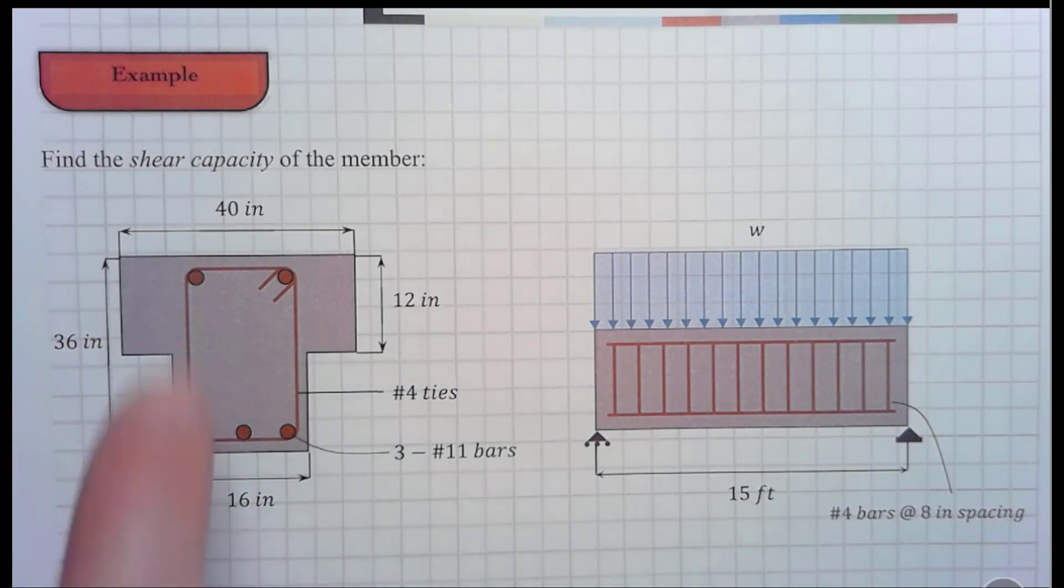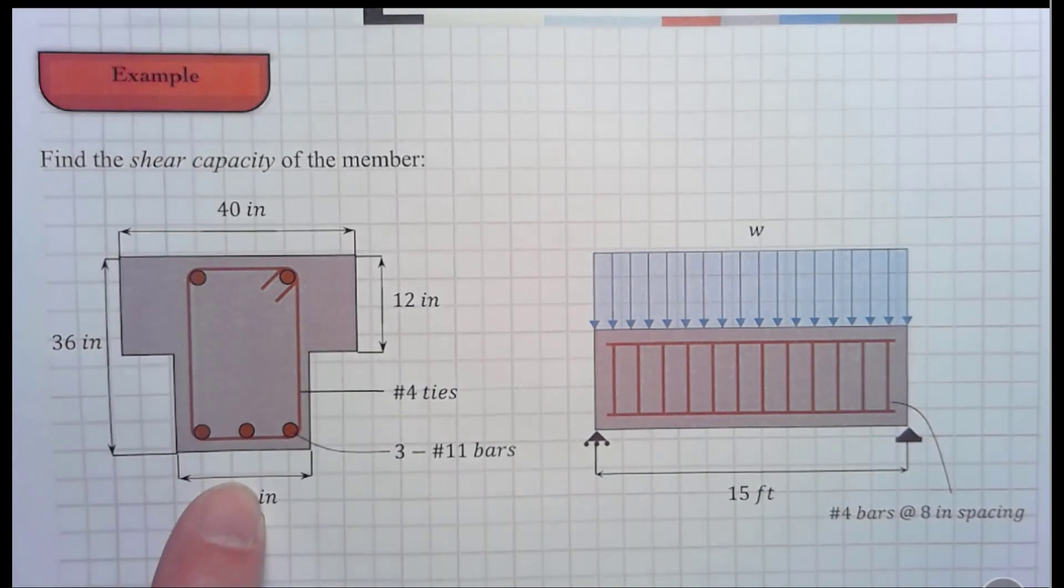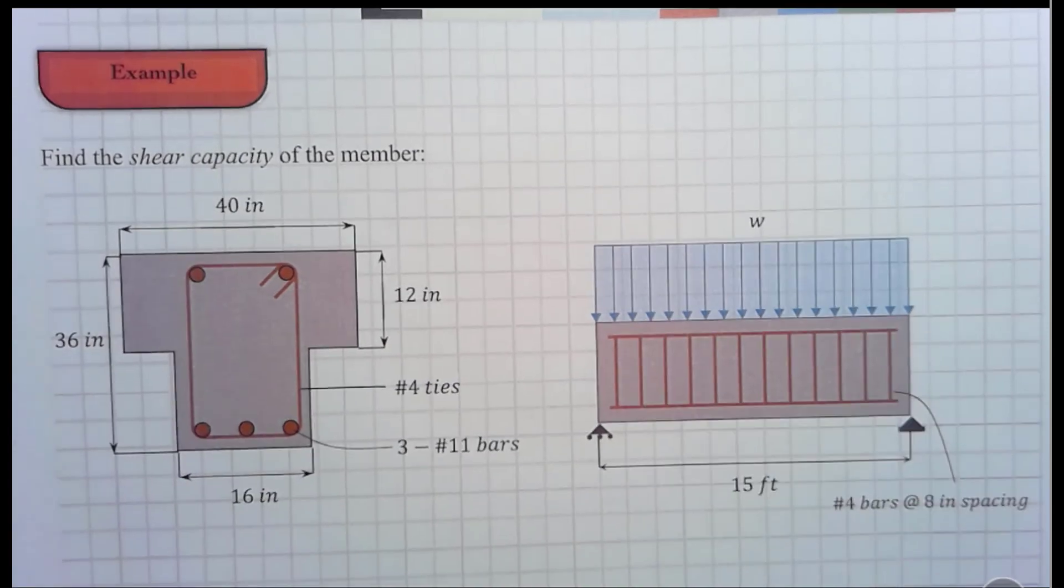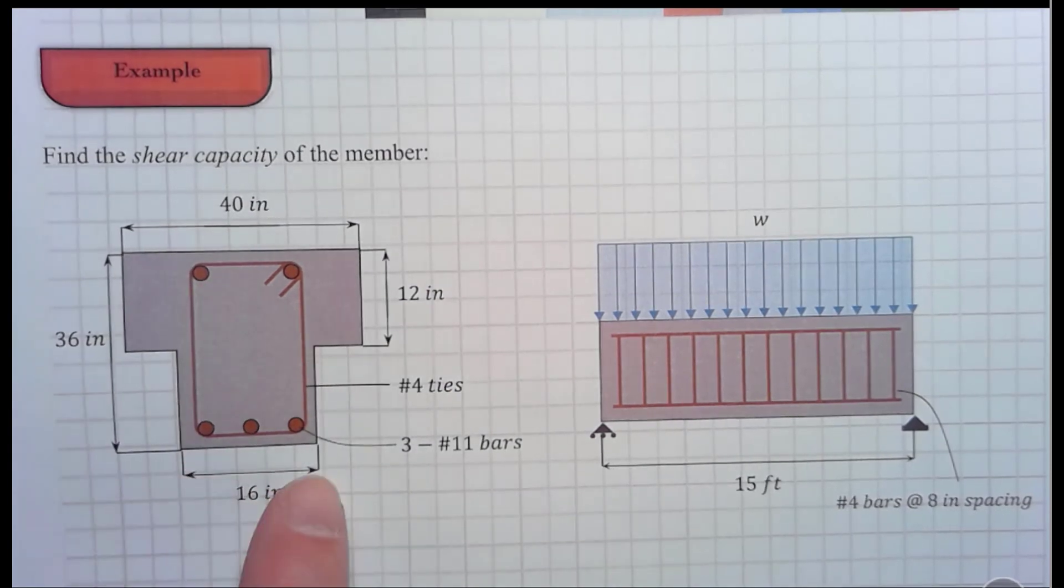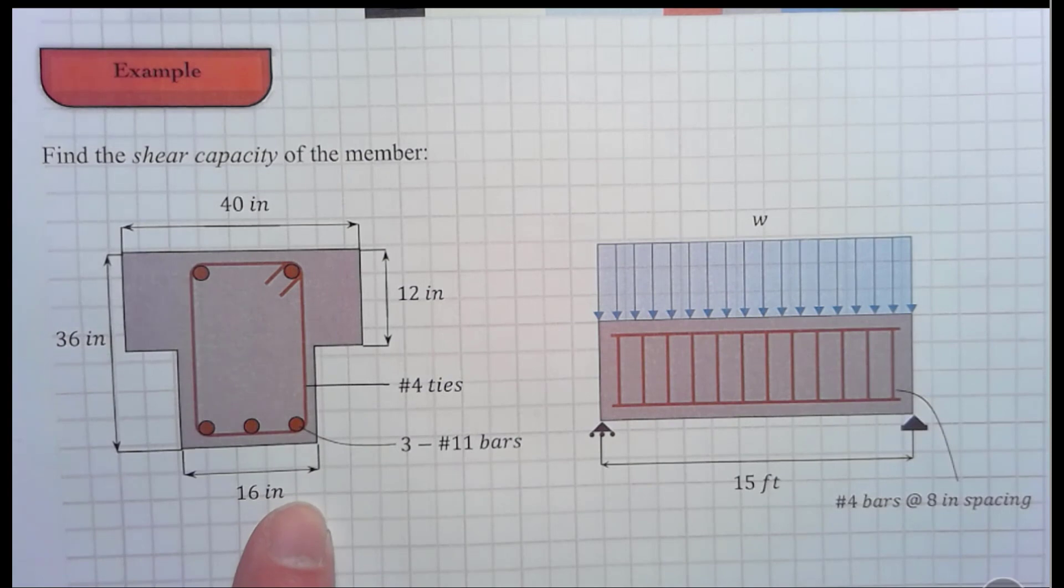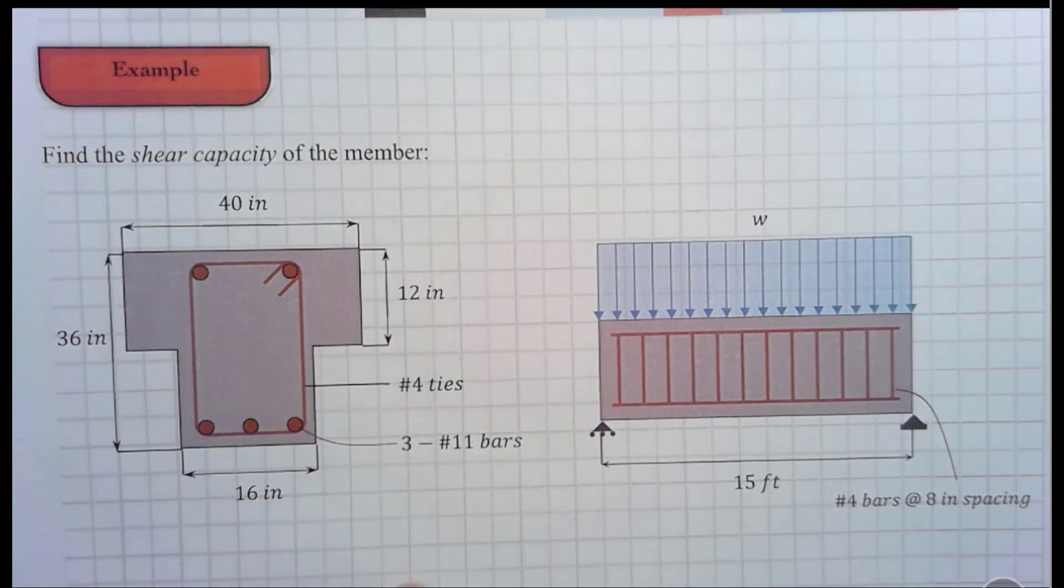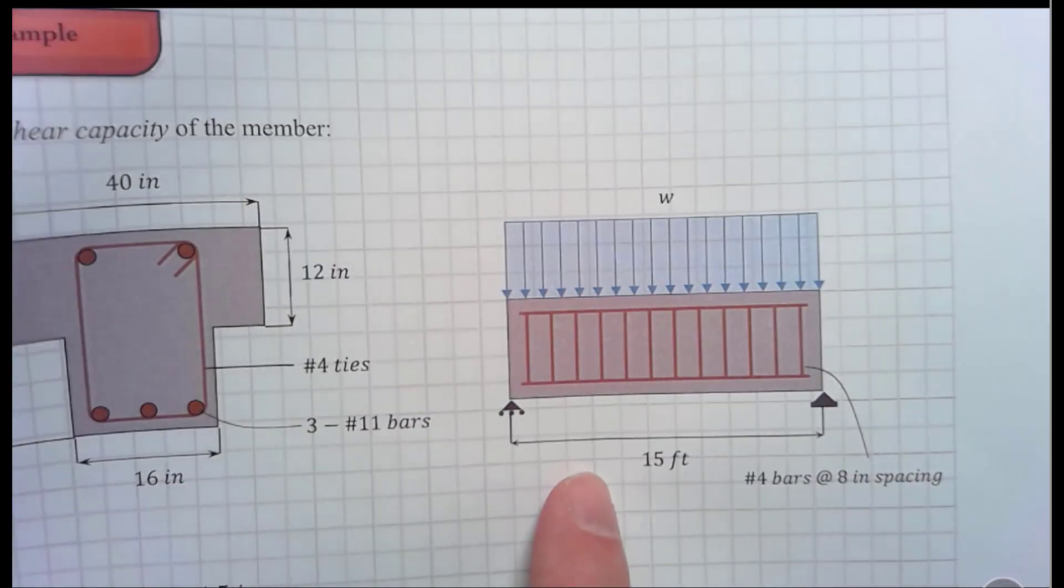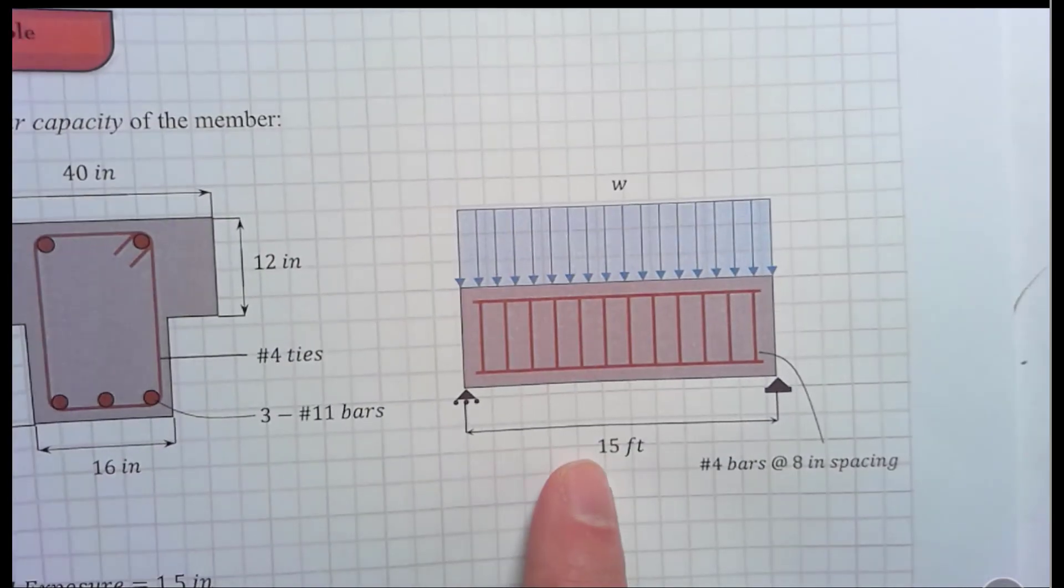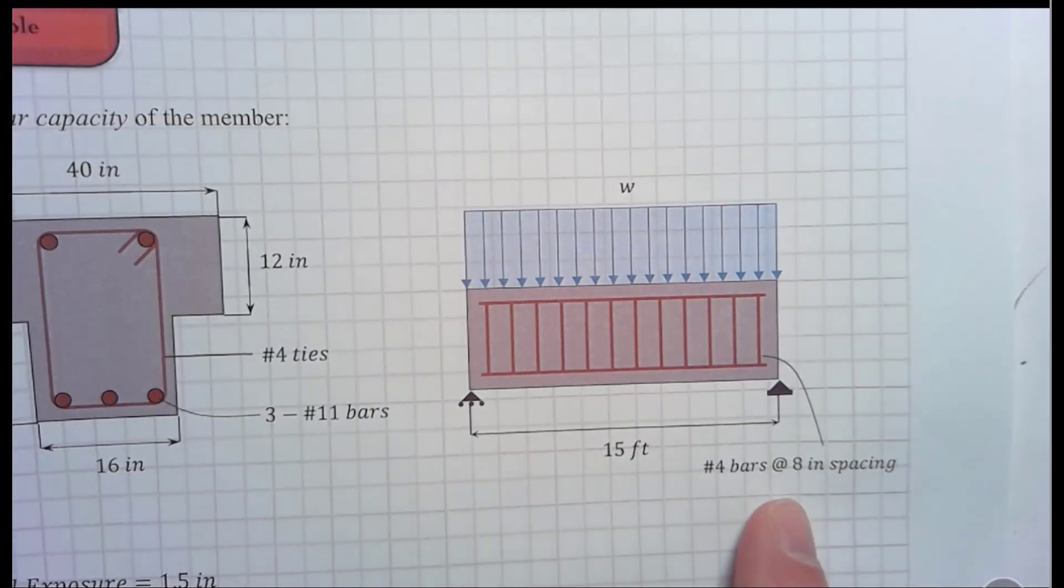So in this problem, we're going to find the shear capacity of this member. It's a T-beam. I'm showing the dimensions in English units. If you are an SI person, I apologize, but that's what my class is being taught in this semester. We see the dimensions all the way around of the T-beam. We're using No. 4 ties, three No. 11 bars at the bottom, and here is the elevation view. It's 15 foot long, and these No. 4 bars are at 8-inch spacing.